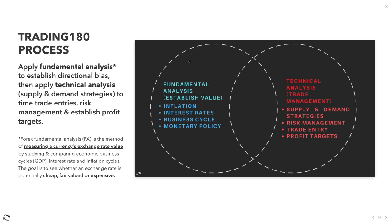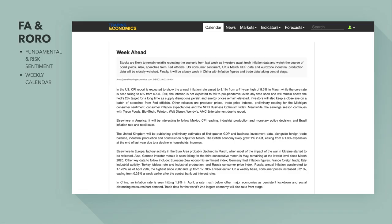So we're using the best of both worlds to make the best trading decisions. Starting off with the calendar for the week ahead on Trading Economics — there's a snapshot here but I'll get into more detail below. The week ahead includes stocks, speeches from Fed officials, US consumer sentiment, UK's monthly GDP, which is important data, and Eurozone industrial production will be closely watched. It will also be a busy week in China with inflation figures and trade data taking center stage.